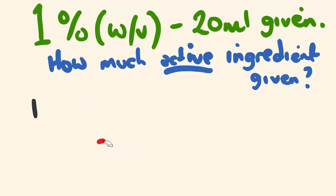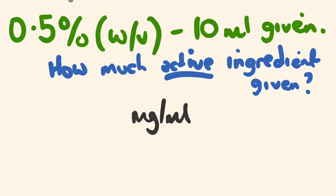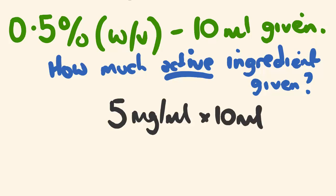Let's go through another one of these types of questions. Say we had 0.5% concentration and 10 mils is given — how much of the active ingredient is given? We change this into milligrams per mil: 0.5 times 10 is 5 milligrams per mil. Then times by 10 mils, because for each mil we're getting 5 milligrams — we are given 50 milligrams of active ingredient.